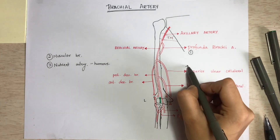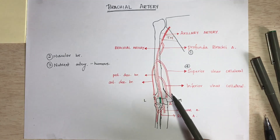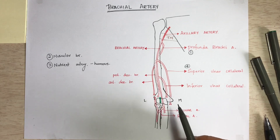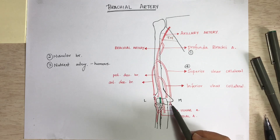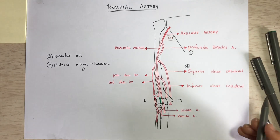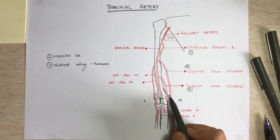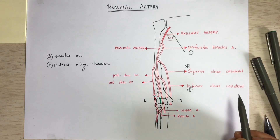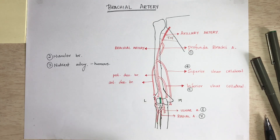Next is the superior ulnar collateral, which runs down accompanying the ulnar nerve and takes part in the anastomosis at the elbow behind the medial condyle of the humerus. Then there is the inferior ulnar collateral, which also runs downwards and takes part in the anastomosis in front of the medial condyle of the humerus. Finally, the two terminal branches are the ulnar artery and the radial artery.